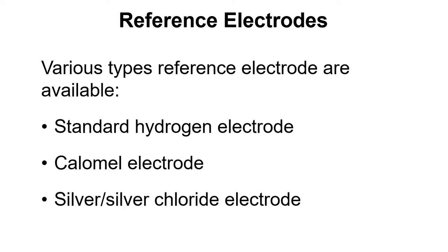In terms of reference electrodes, there are various types available. We have the standard hydrogen electrode, but that involves using platinum which is very expensive and hydrogen gas which is inconvenient and dangerous. We also have the calomel electrode which involves mercury, which is toxic. So it turns out that the silver silver chloride electrode is a really convenient starting point for making both the reference electrode and the ion-selective electrode.